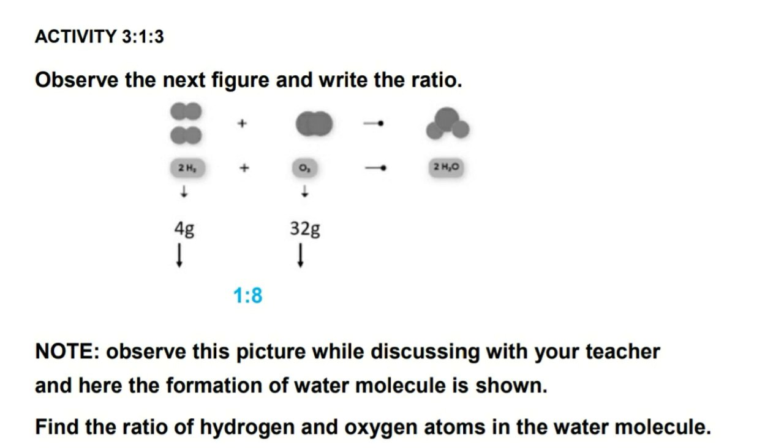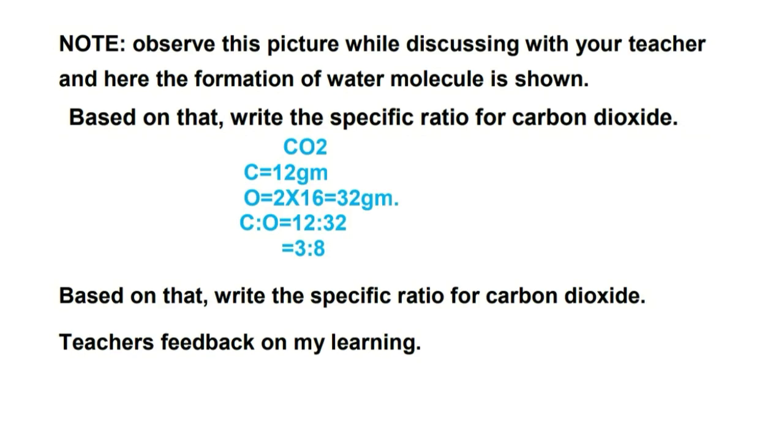Next question: based on that, write the specific ratio for carbon dioxide. In carbon dioxide there is C and O2 molecules. The mass of carbon is 12 grams and mass of oxygen is 16. There are two molecules of oxygen, so 16 into 2, 16 to the 32 grams.